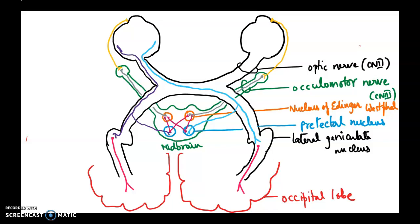Now the third scenario: damage to the oculomotor nerve on the left-hand side, while I am shining light on the left eyeball. If the left oculomotor nerve is damaged, the incoming sensory information will still be fine — it will travel via the purple and blue neurons to the occipital lobe and to the midbrain. However, the gray neuron that travels through the oculomotor nerve is damaged on the left-hand side.